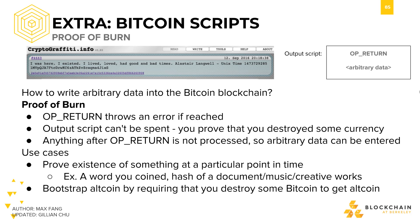Aside from using OP_RETURN for the sake of deriving an altcoin's value, you can also write arbitrary data onto the blockchain. Under OP_RETURN, there's space to write whatever you want, so people have been pretty creative with this.